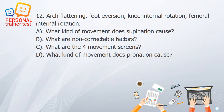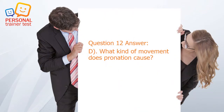Question 12. A. What kind of movement does supination cause? B. What are non-correctable factors? C. What are the four movement screens? D. What kind of movement does pronation cause? Answer: D. Pronation causes arch flattening, foot eversion, knee internal rotation, and femoral internal rotation.